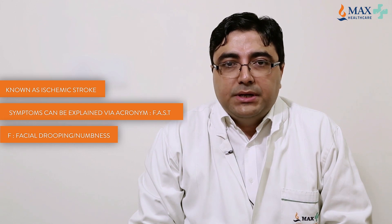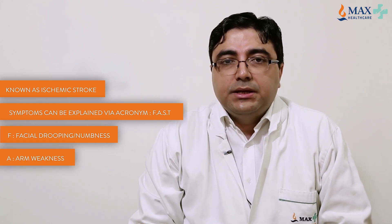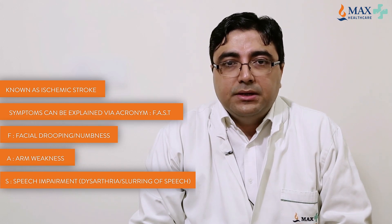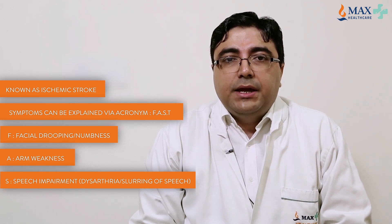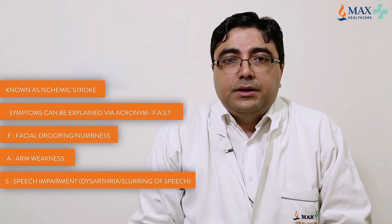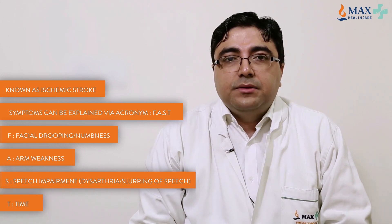The signs and symptoms of stroke can be explained by a simple acronym: ACT FAST. F is for face, which includes facial drooping or facial numbness. A is for arm weakness. S is for speech, where there is speech impairment like dysarthria or slurring of speech and speech difficulty. T is for time — time is brain, because the earlier the patient reaches the hospital, the earlier the recovery.